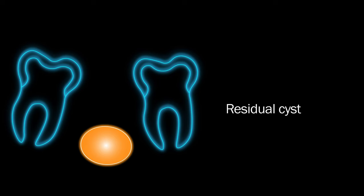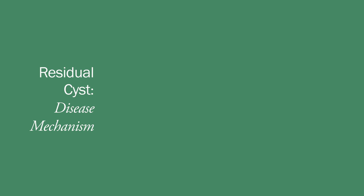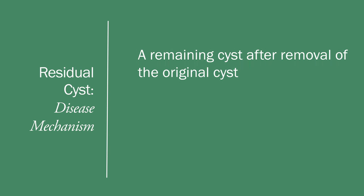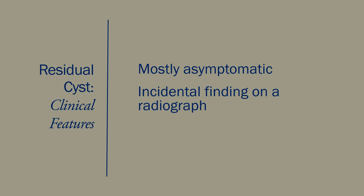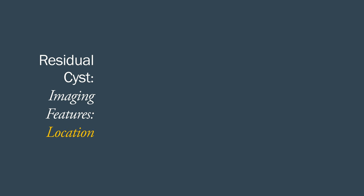Let's proceed to another inflammatory odontogenic cyst — the residual cyst. As the name suggests, this is a cyst where the offending tooth is now missing. A residual cyst is a remaining cyst after removal of the original cyst, most commonly a radicular cyst. There will be a history of extraction of the tooth that caused the radicular cyst. Most residual cysts are asymptomatic and are incidentally identified on a radiograph acquired for other reasons.